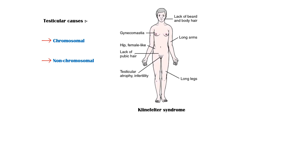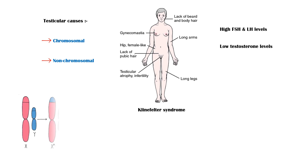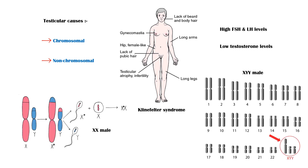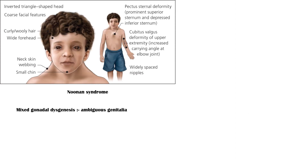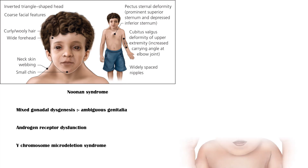Testicular causes of male infertility can be divided into chromosomal causes and non-chromosomal causes. Chromosomal causes include Klinefelter syndrome, which is characterized by high FSH and LH levels and low testosterone levels. Other conditions include XX male and XYY male, Noonan syndrome, mixed gonadal dysgenesis which leads to ambiguous genitalia, androgen receptor dysfunction, Y-chromosome microdeletion syndrome, and Down syndrome.